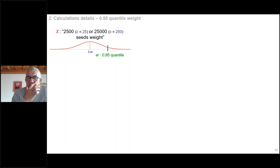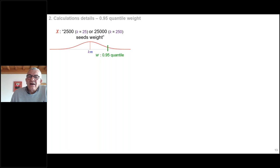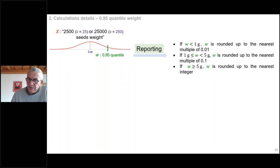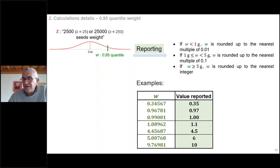What the calculator delivers is the 2,500 or 25,000 seed weight. For reporting in ISTA rules, there are rounding rules: if the weight is less than one gram, use two decimals; if between one gram and five grams, use one decimal; and if greater than five grams, round to the nearest integer. This is what will be reported in the calculator.